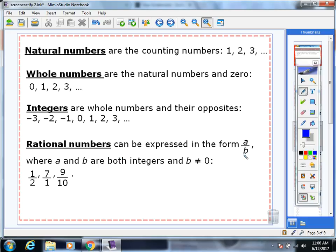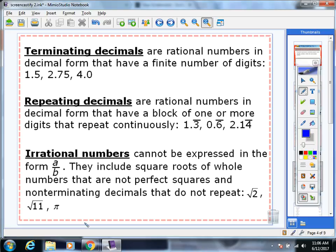Rational numbers are anything we can write in the form A divided by B, where A and B are both integers and B cannot be 0. For instance, 1 half, 7 over 1, 9 over 10. Those are rational numbers. Terminating decimals and repeating decimals are both rational.